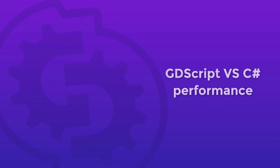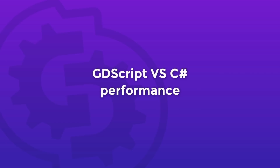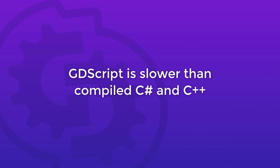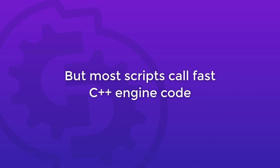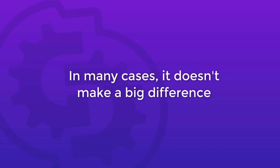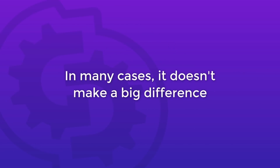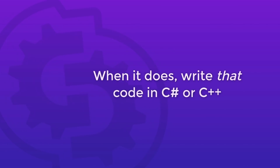How do GDScript and C Sharp performance compare? GDScript code itself doesn't execute as fast as compiled C Sharp or C++. However, most of your code calls functions written with fast algorithms in C++ inside the engine. In many cases, writing gameplay logic in GDScript, C Sharp, or C++ won't have a significant impact on performance. And when it does, you can write that specific bit of code in C Sharp or C++.